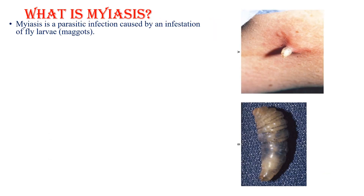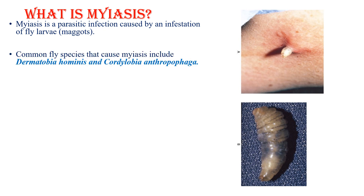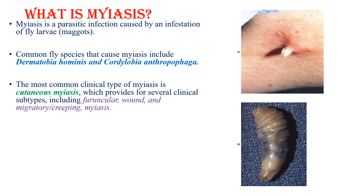Myasis is a parasitic infection caused by infestation of maggots. Common fly species that cause myasis include Dermatobia hominis and Cordylobia anthropophaga. The most common clinical type of myasis is cutaneous myasis, which presents several clinical subtypes including furuncular,